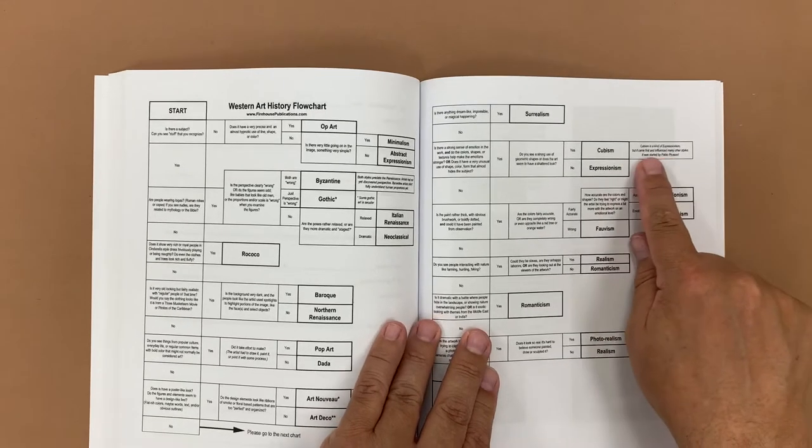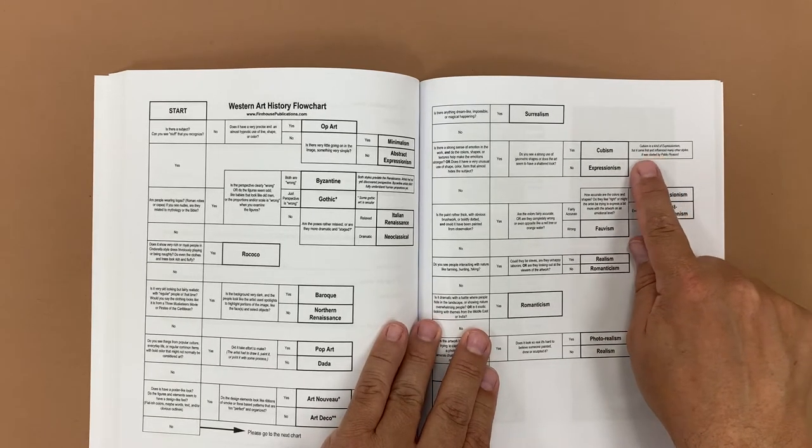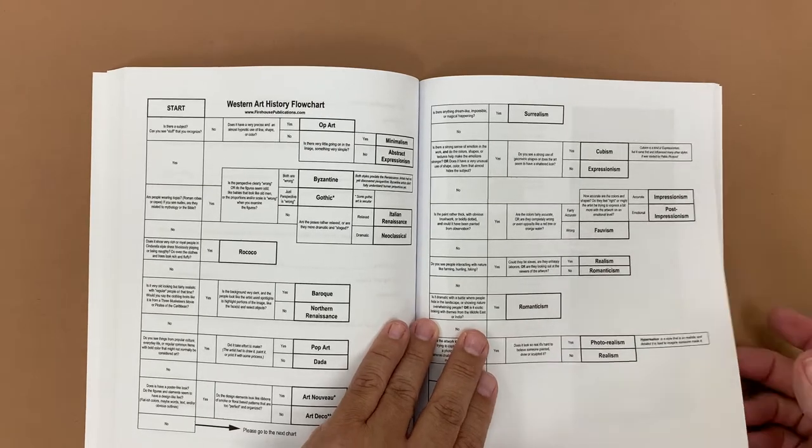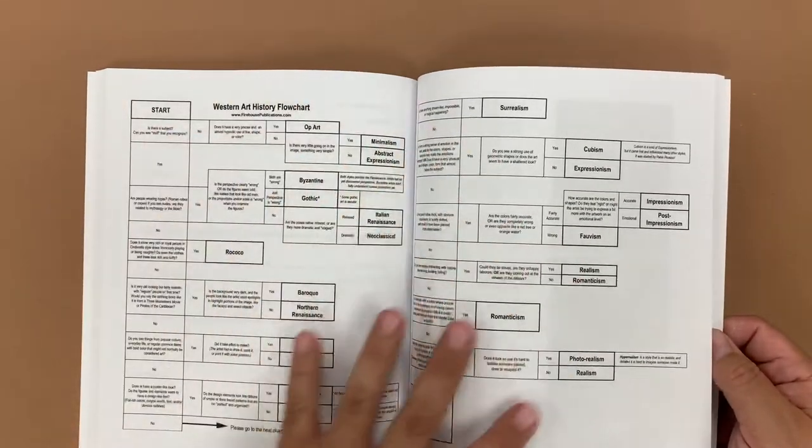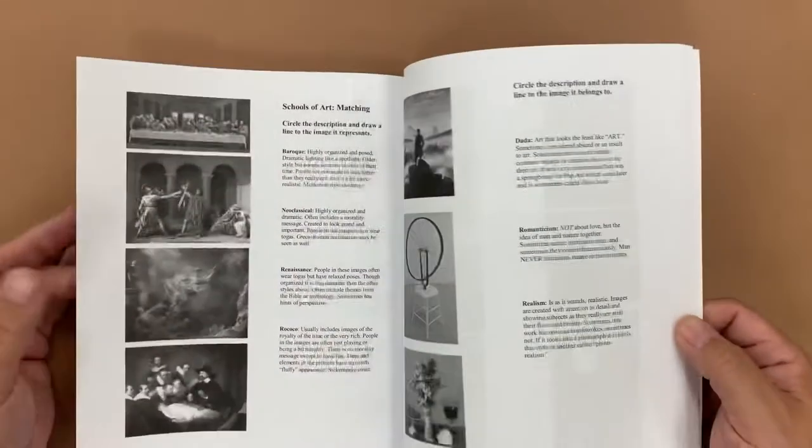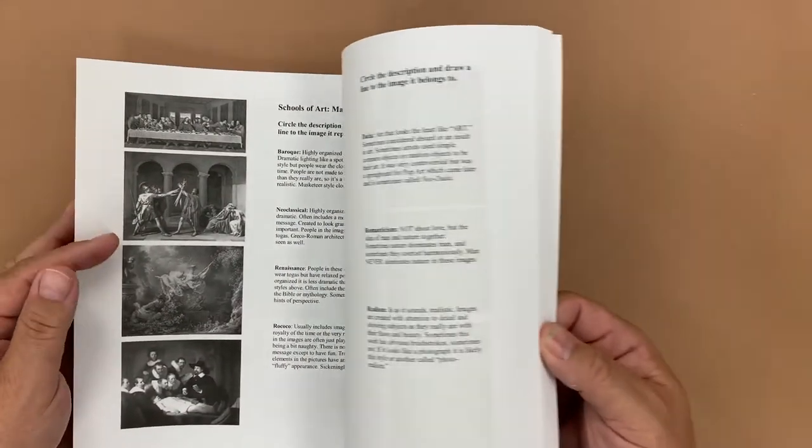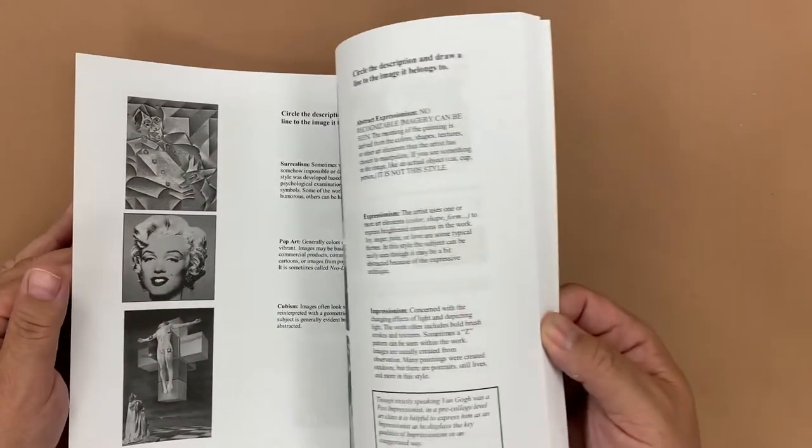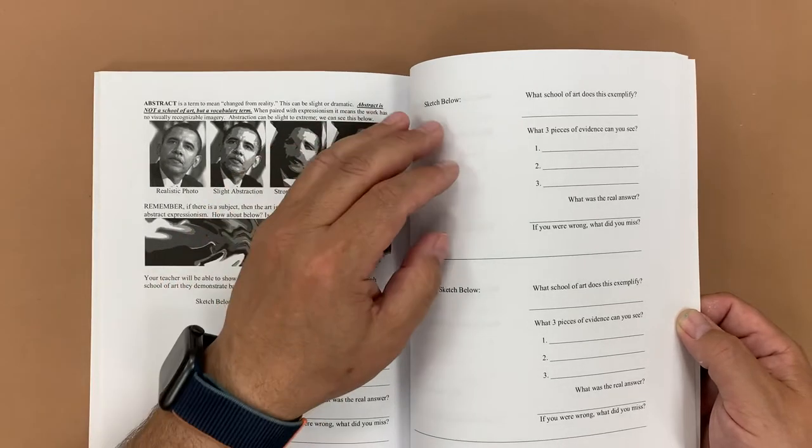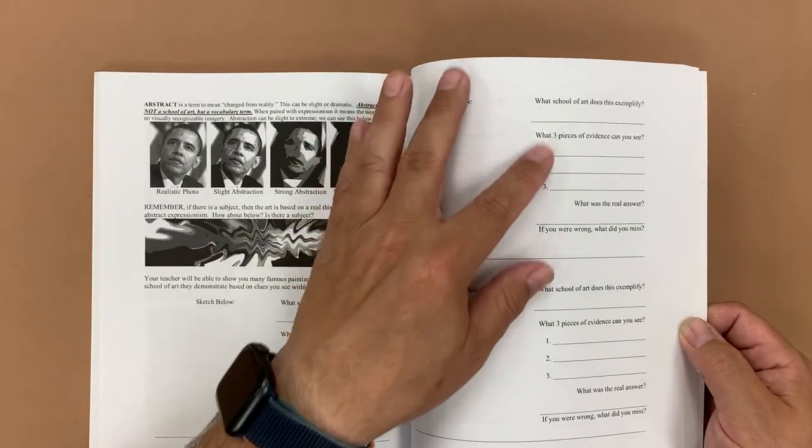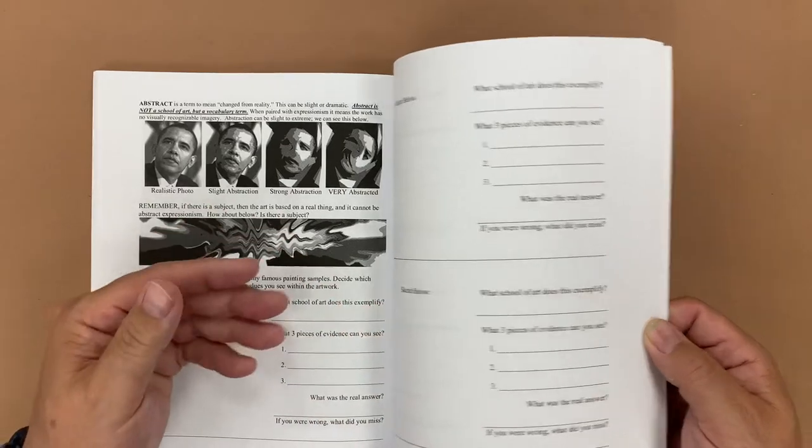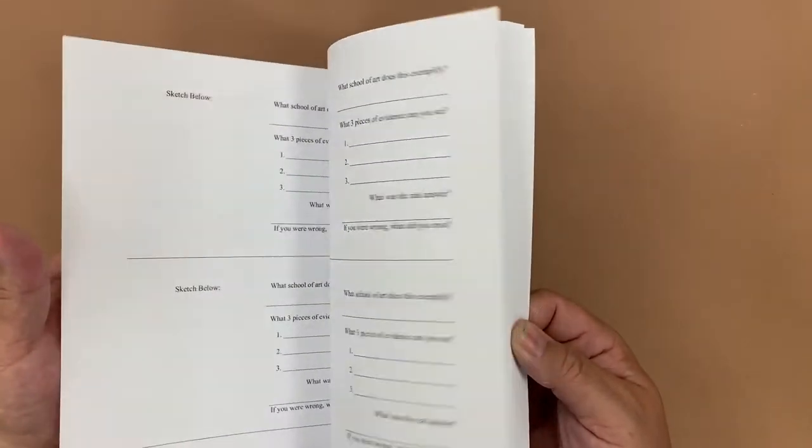And then a little note over here talks about how cubism is a kind of expressionism, but because it's so important, we set it apart in general. So this is a great way for students to explore the Western art through this. And then we have some support pages where they can learn to identify the different schools of art. We have some pages where they can do a thumbnail of a famous work of art and make a guess as to which school it belongs to, what evidence, and then justifying their answers. So that's available to them.